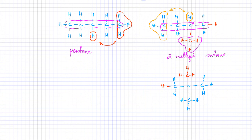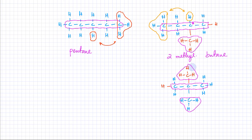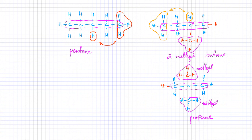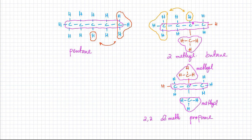Coming to the third isomer, the main chain has three carbon atoms in a row — that would be propane — and there are two branches coming out of the main chain, both methyl branches. Both methyl groups are attached on the second carbon atom of the main chain, so the name is 2,2-dimethylpropane.